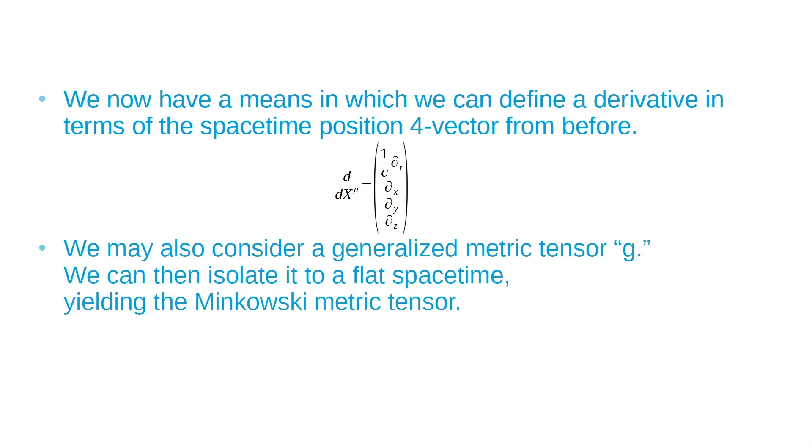We may also consider a generalized metric tensor g. We can isolate it to a flat spacetime, yielding the Minkowski metric tensor, given by eta. We can write that in component form to see what's going on under the hood.